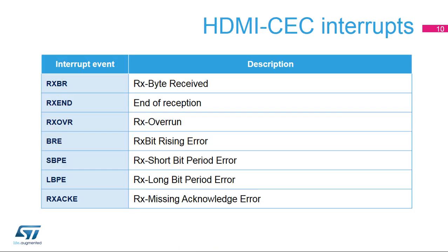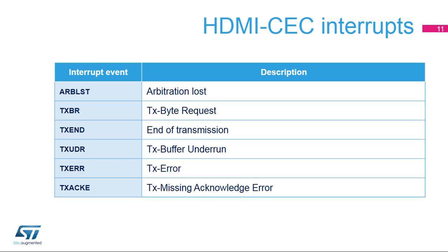Here is an overview of HDMI CEC reception interrupt events. An interrupt can be produced during reception if a receive block transfer is finished or if a receive error occurs. Similarly, an interrupt can be produced during transmission if a transmission block transfer is finished or if a transmit error occurs.